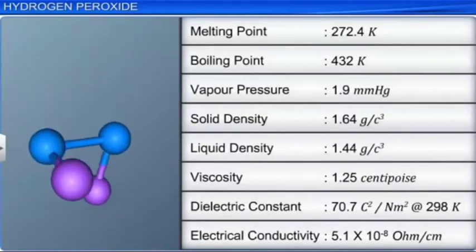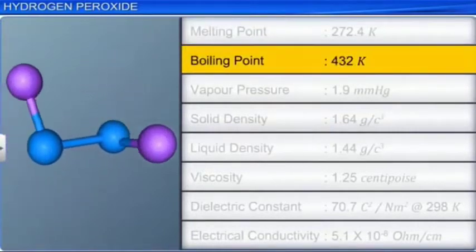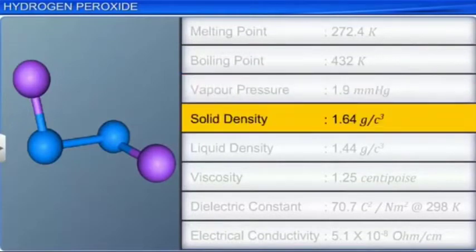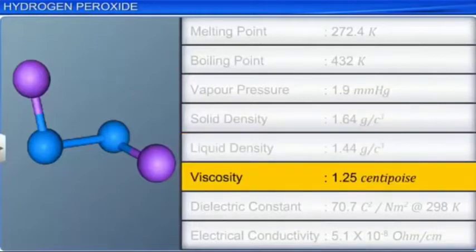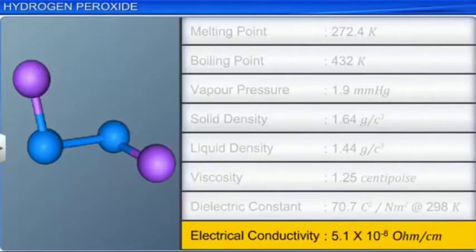It has a melting point of 272.4 Kelvin, a boiling point of 432 Kelvin, a vapor pressure of 1.9 millimeters Hg, a solid density of 1.64 grams per cubic centimeter and a liquid density of 1.44 grams per cubic centimeter. Its viscosity is slightly higher than water at 1.25 centipoise. Its dielectric constant at 298 Kelvin is 70.7 Coulomb squared per newton meter squared, and electrical conductivity is 5.1 times 10 to the minus 8 ohm per centimeter.